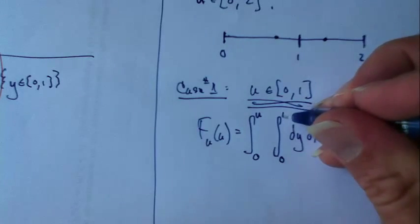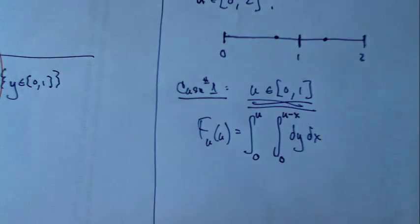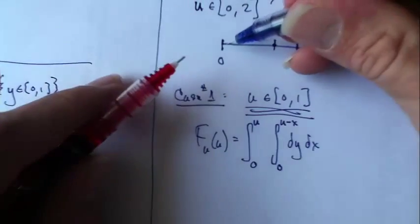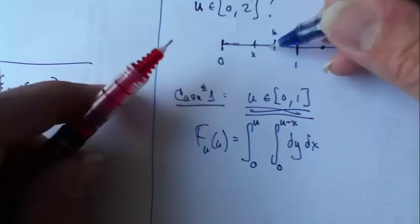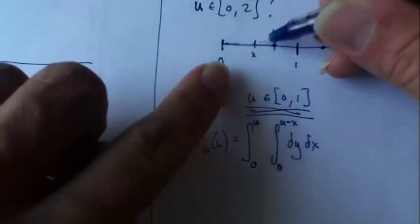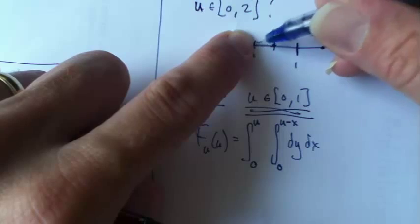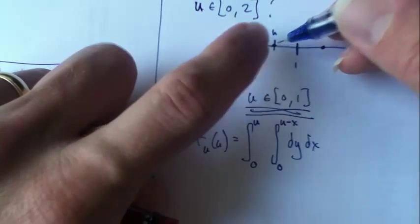See that? If u is here, then x can go from 0 up to u. Let's say if x falls here, then y can go anywhere from u minus x down to 0, or from 0 up to u minus x. This distance is u minus x.